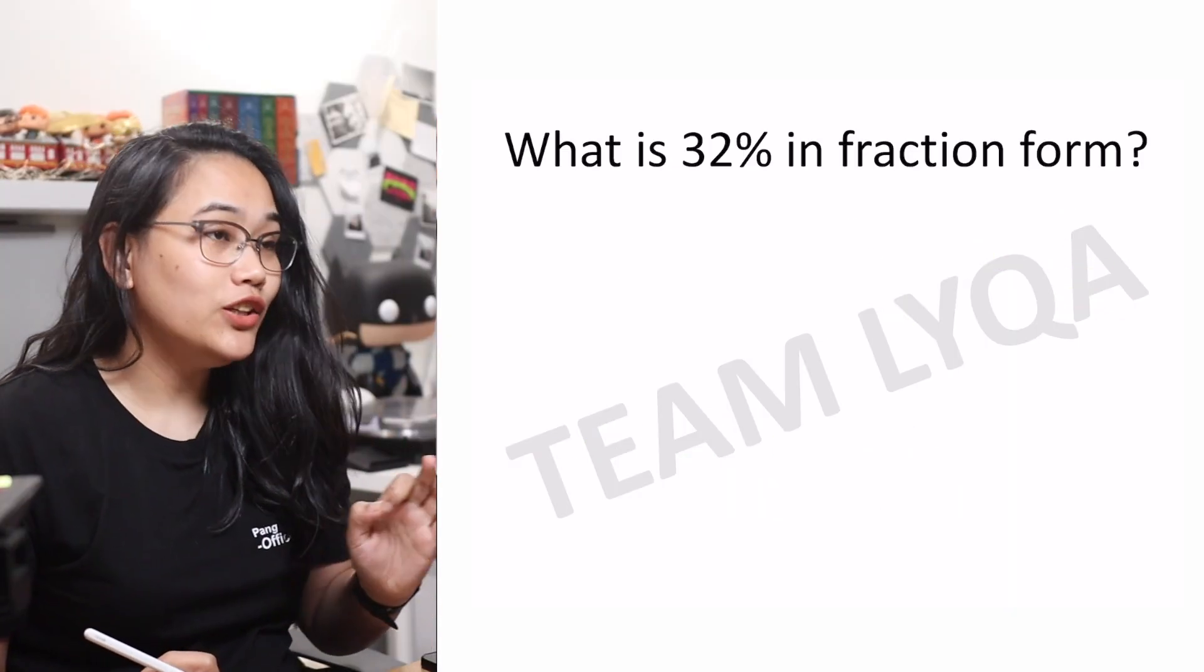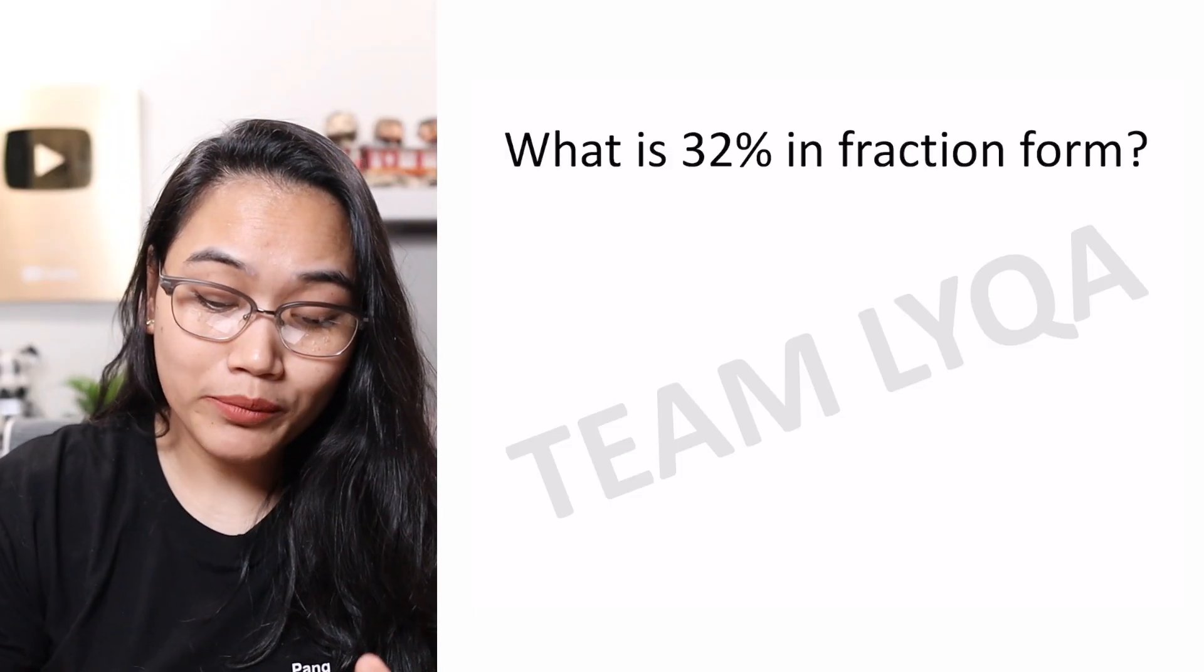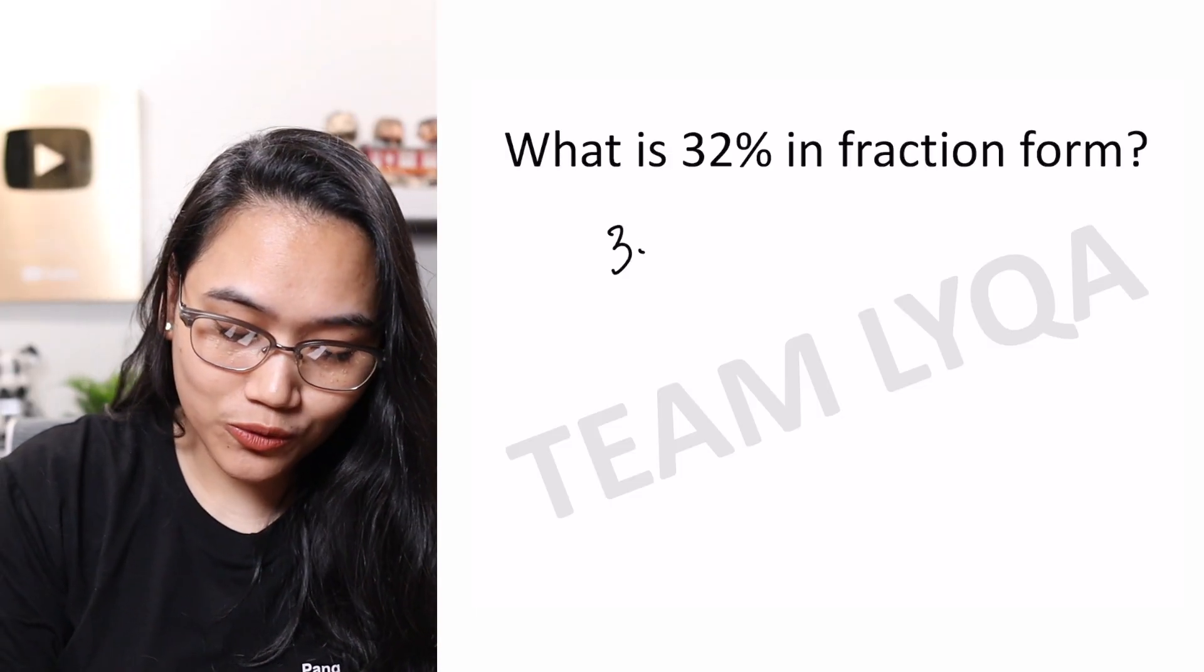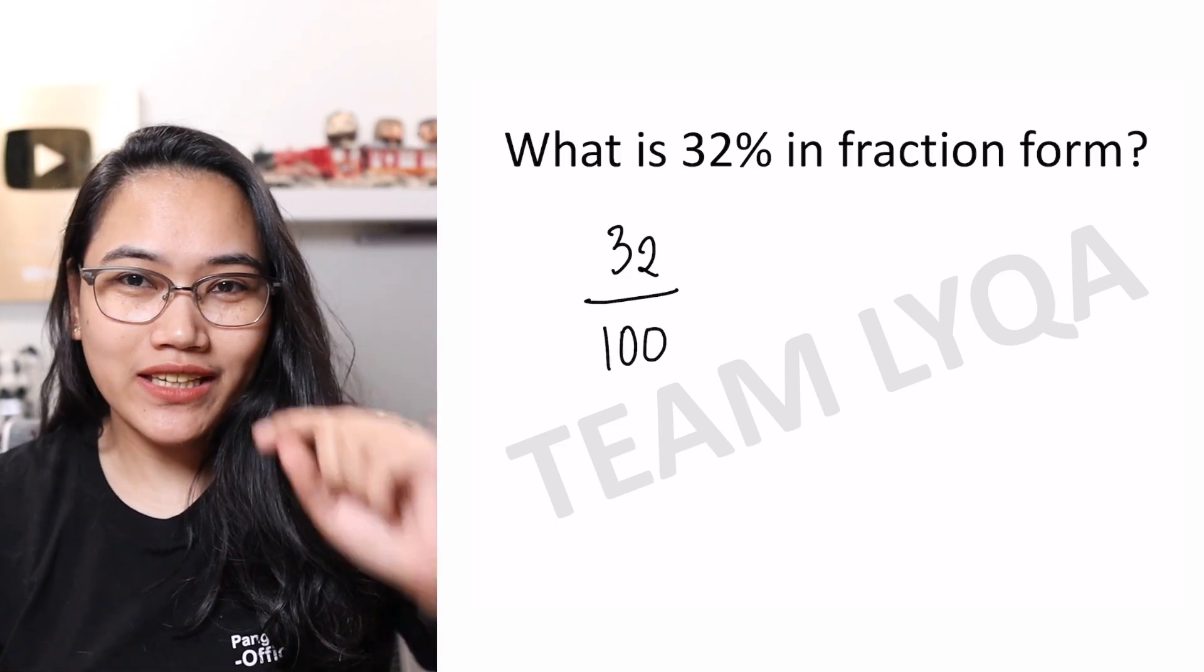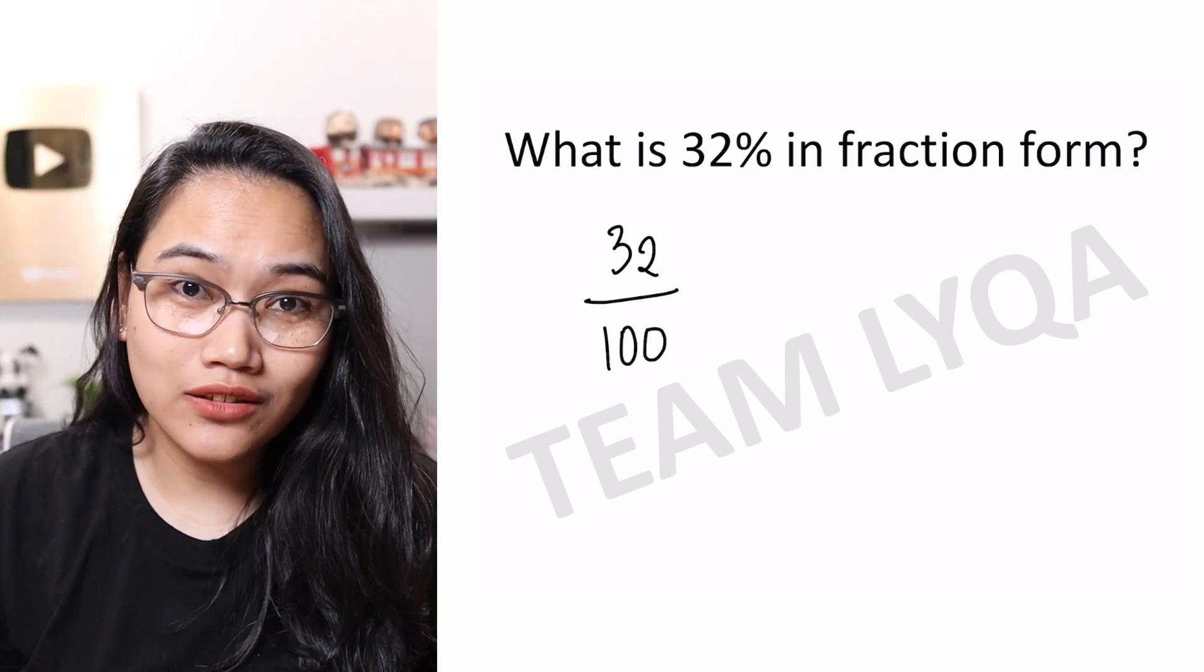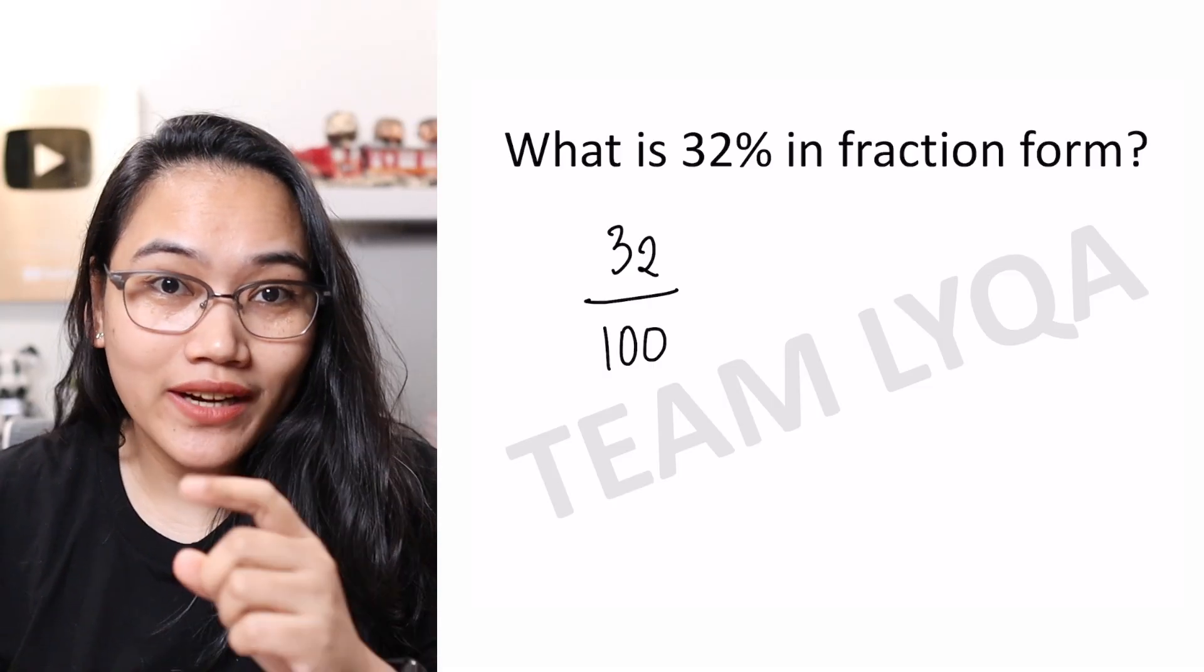How about this? What is 32% in fraction form? This time, 32% is 32 over 100. Since they're both even, both divisible by a number, it's not yet in lowest terms. That's what we'll do next.